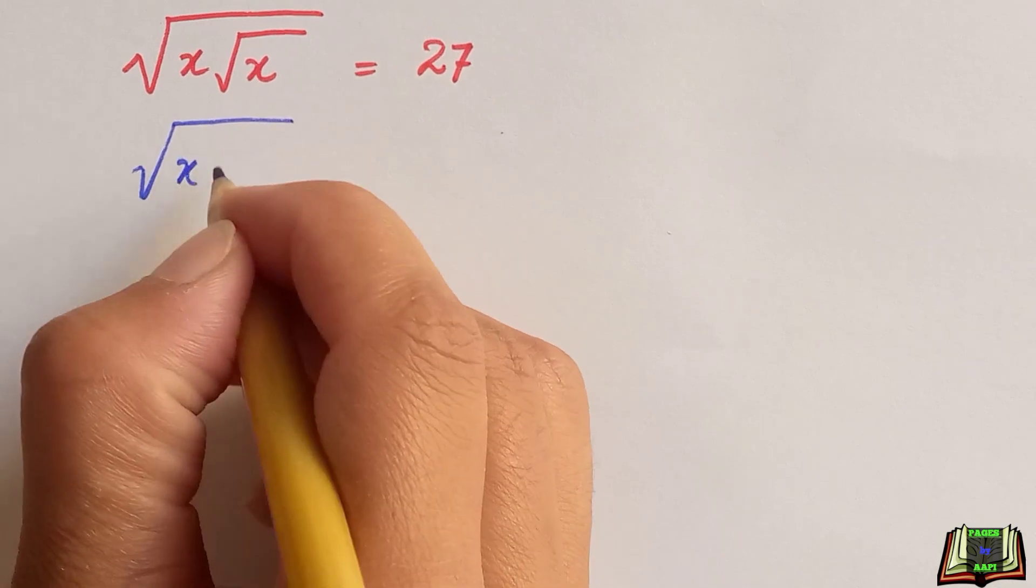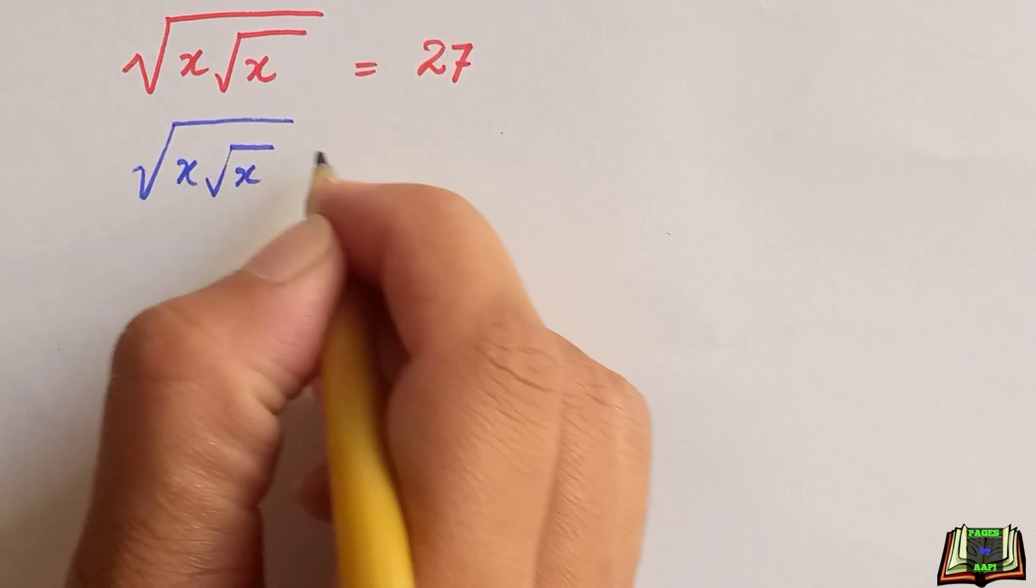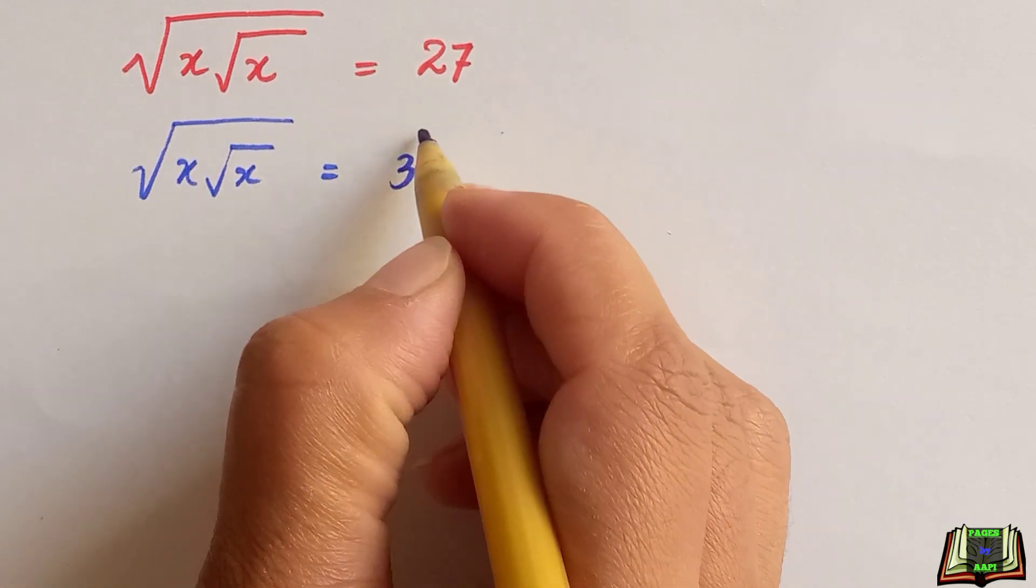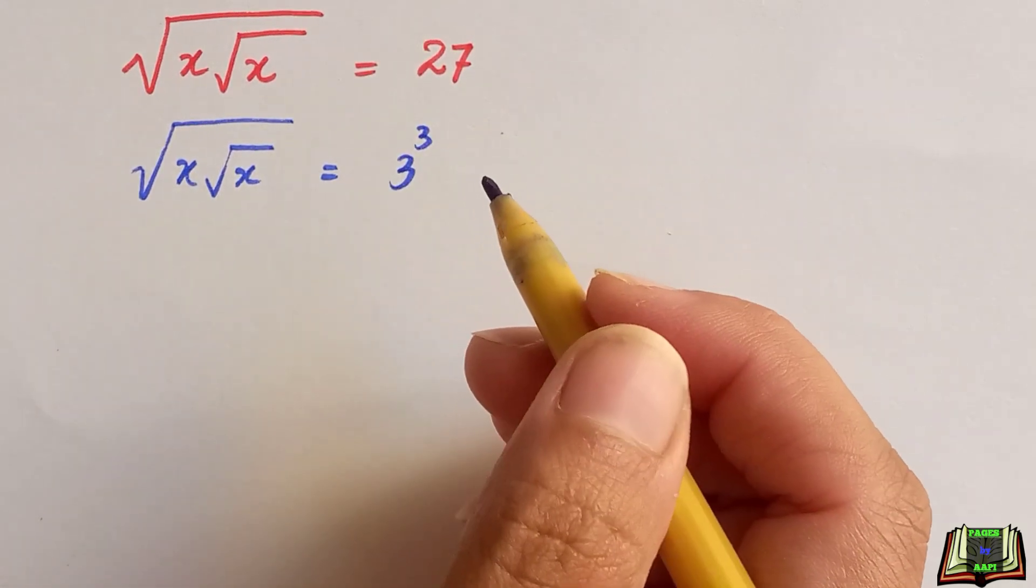Square root of x times square root of x is equal to 27 can be written as 3 raised to the power 3, as 3 times 3 times 3 is equal to 27.